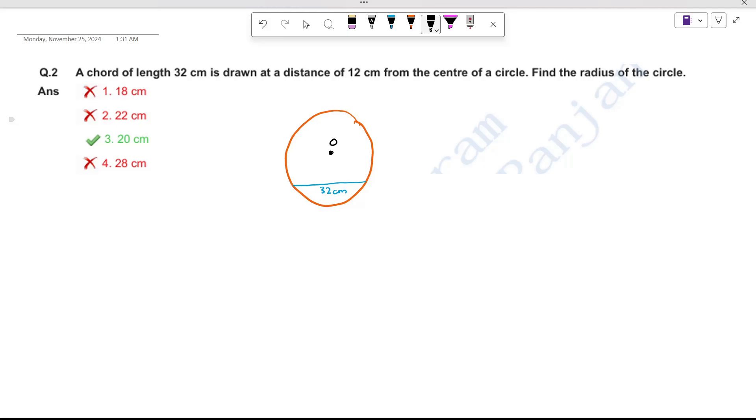A chord of length 32 cm is at a distance of 12 cm from the center. From here to here, the distance shown is 12 cm. Find the radius.